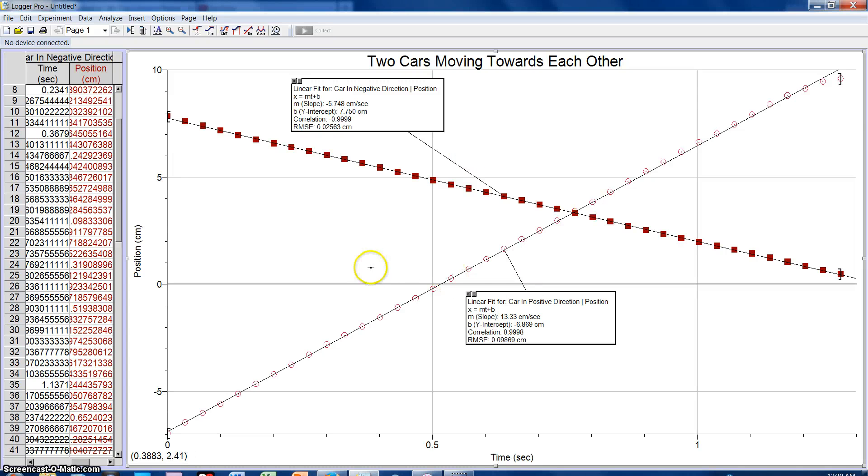Hi, so this is the explanation for the graph of two cars moving towards each other.